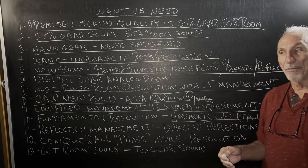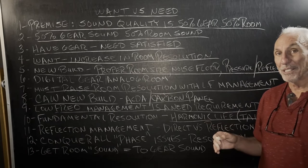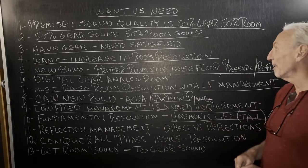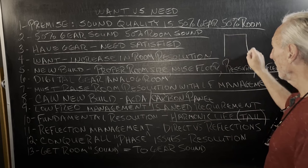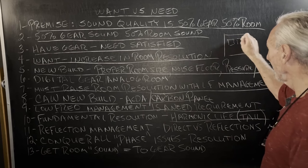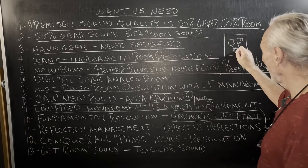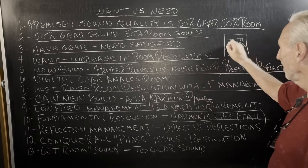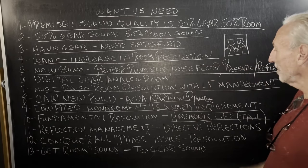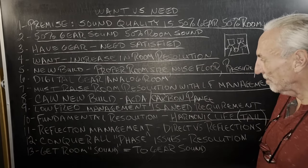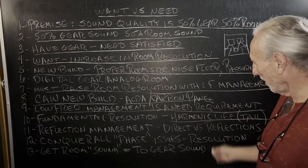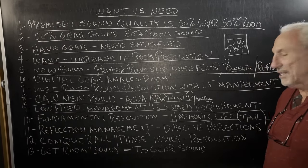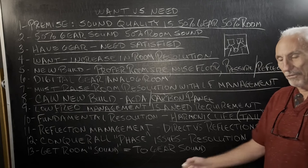The room produces all kinds of reflections. Music likes some of them, but we really like the direct energy — the straight-line energy from our speakers. So we have the direct energy and all the reflected energy. We have to have a balance; we have to manage the reflections, the time signature, so they don't interfere. Reflection management: direct versus reflected, conquering all phase issues in the room — low frequency management, reverb, all kinds of issues.